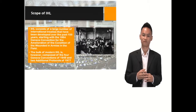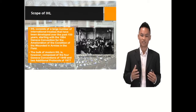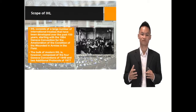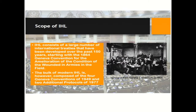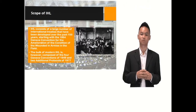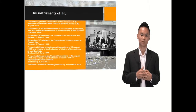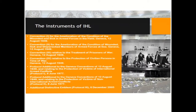Now, let's look at the scope of IHL. International humanitarian law consists of a large number of international treaties that have been developed over the past 150 years, starting with the Geneva Convention of 1864, which is the amelioration of the condition of the wounded in armies in the field. However, the bulk of modern IHL is composed of the four Geneva Conventions of 1949 and two additional protocols of 1977. Let's look at each of the instruments of international humanitarian law. We have the Convention for the Amelioration of the Condition of the Wounded and Sick in Armed Forces in the Field.